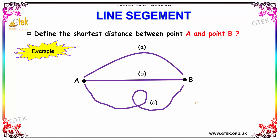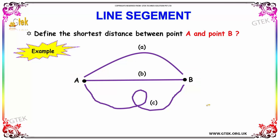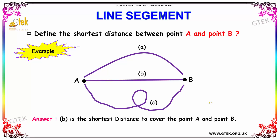Our next example asks us to define the shortest distance between point A and point B. Here you have point A and here you have point B. Which will be the shortest distance — path A, path B, or path C? The answer is B, which is the shortest distance to cover from point A to point B.